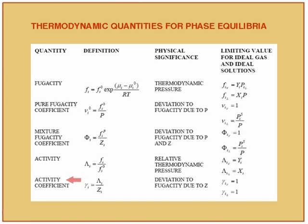If the activity coefficient goes to 1, then it is an ideal solution following Raoult's law. At equilibrium, the fugacity of the ith component in the vapor phase equals the fugacity in the liquid phase, with the same temperature and pressure in all phases. For vapor-liquid equilibrium we have only two phases — vapor and liquid — with the second liquid and solid phases dropped out.